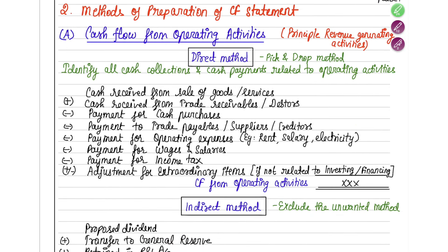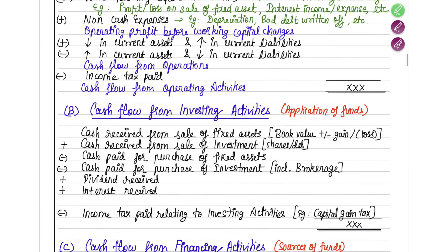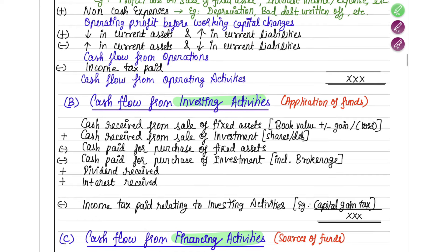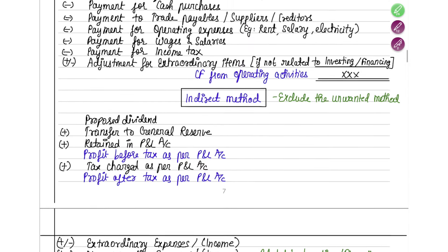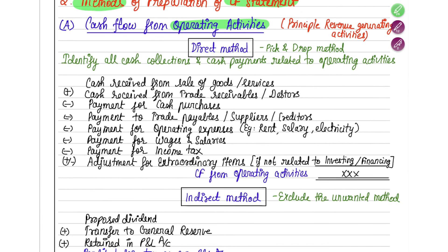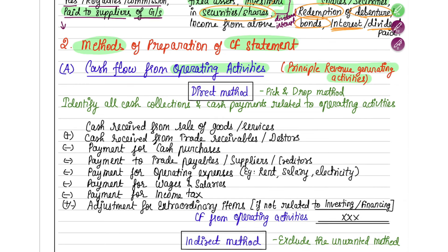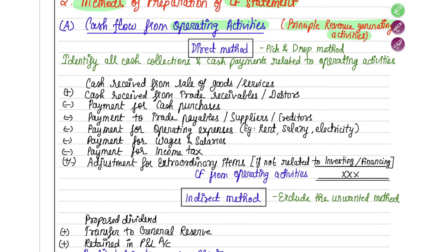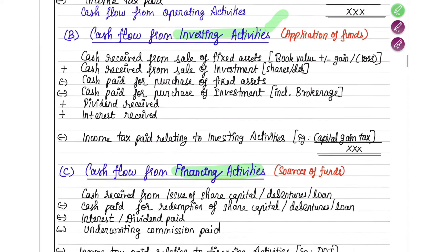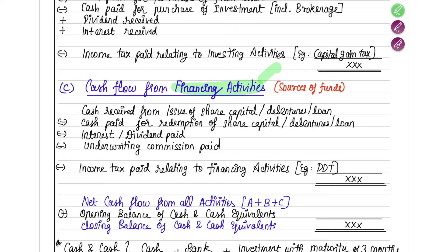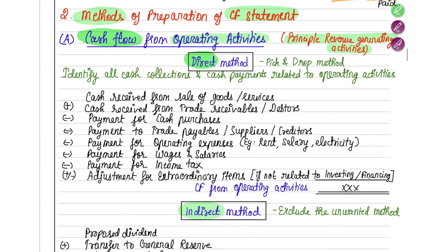The cash flow statement is split into three parts: operating activities, investing activity, and financing activity. For investing and financing activities, there is only one method of preparation. However, for operating activity alone, there are two methods: the direct method and the indirect method.